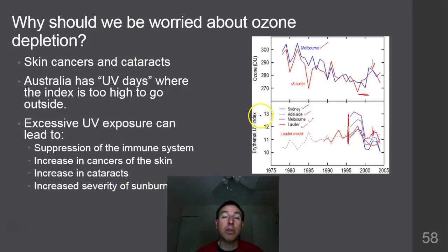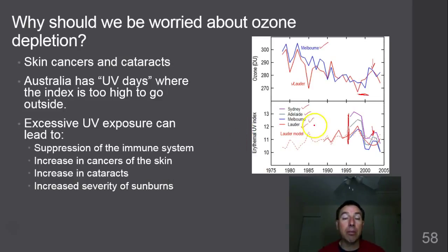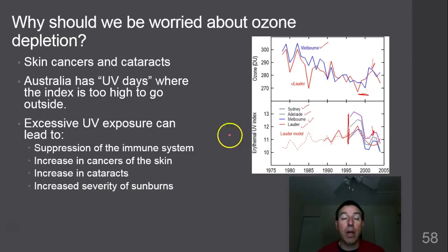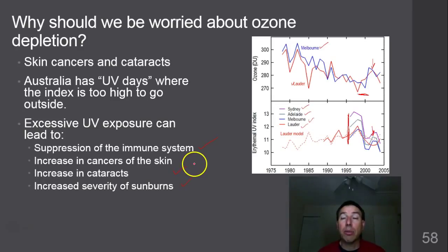Excess exposure to UV, particularly UVB rays, is responsible for skin cancers such as malignant melanoma and basal carcinomas. UV-A and UV-B exposure can also suppress your immune system, increase cataracts, and increase the severity of sunburns. If you get sunburned a lot, that could be a sign of future skin cancer issues, so you really want to protect yourself.